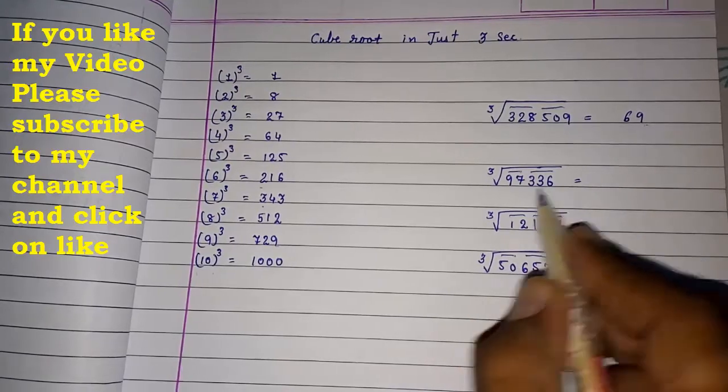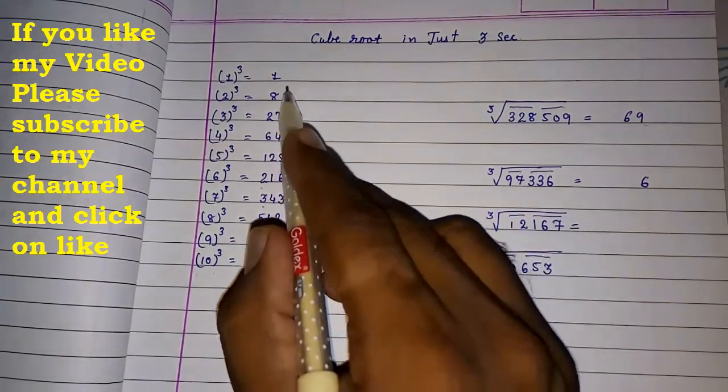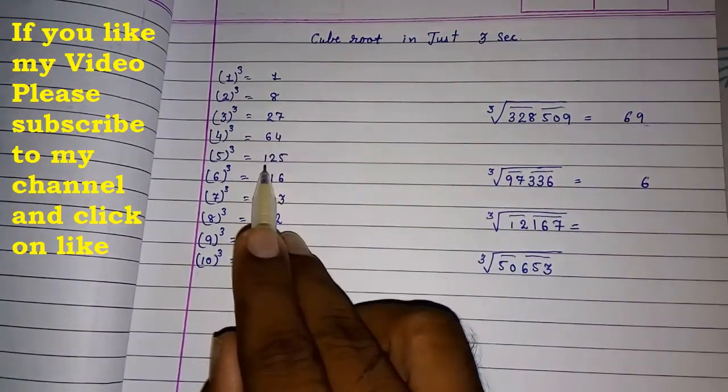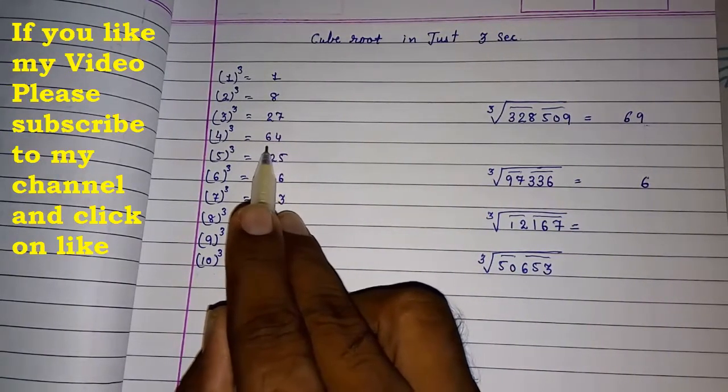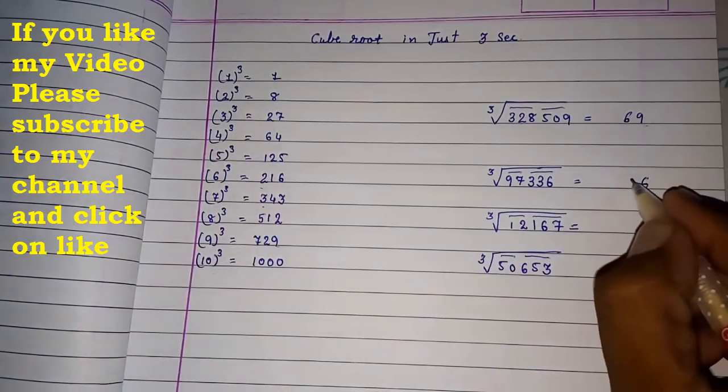Here also, look here. Ending with 6. So 6 ending with 6. So last digit will be 6. Now 97. 97 will appear between 64 and 125. So here it will come. So we have to see the previous. That is 4. So 46.